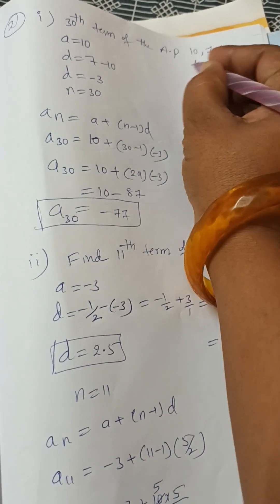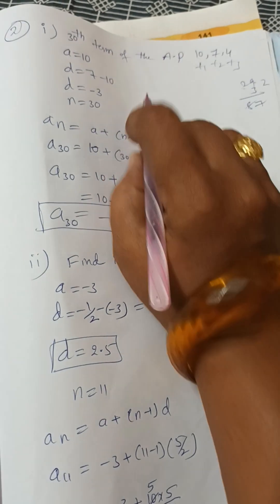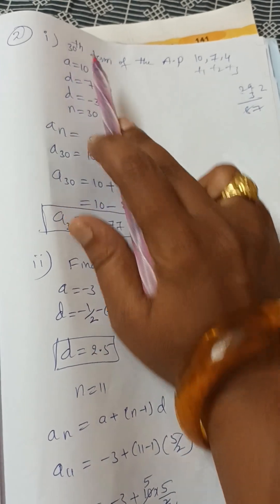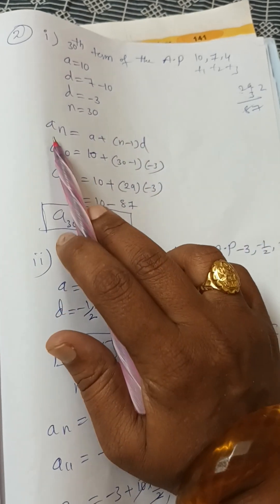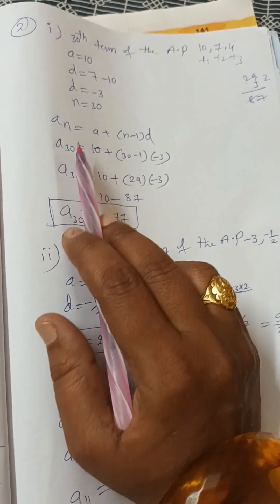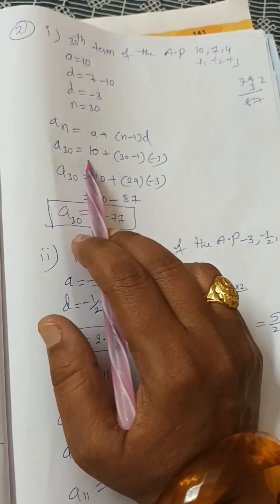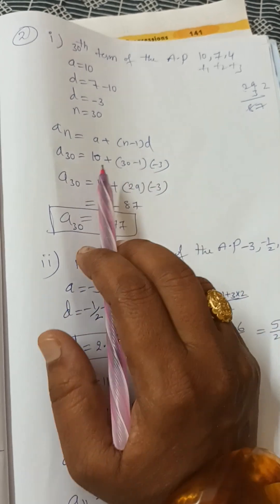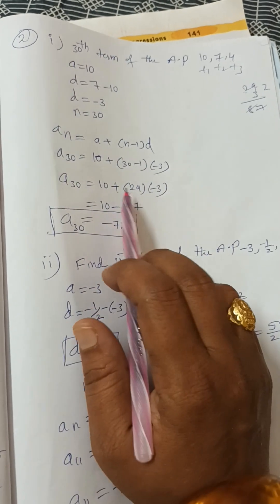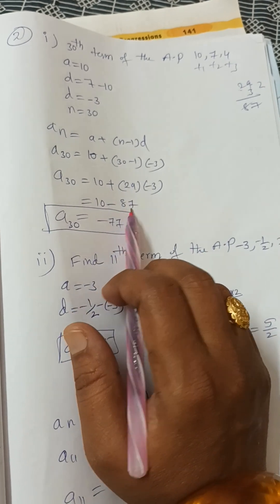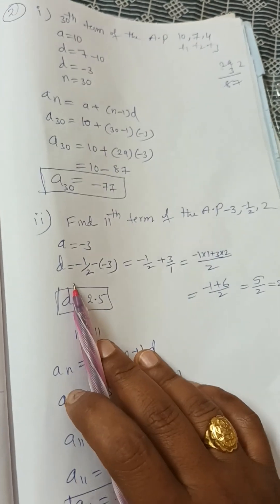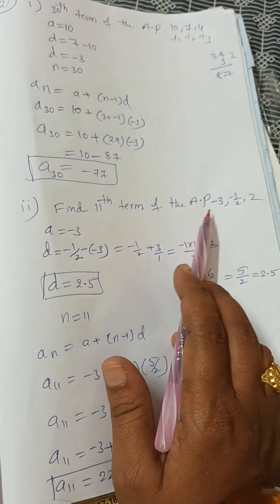The common difference d = t₂ − t₁ = 7 − 10 = −3. We need the 30th term so n = 30. Using aₙ = a + (n − 1) × d: a₃₀ = 10 + (30 − 1) × (−3) = 10 + 29 × (−3) = 10 − 87 = −77.